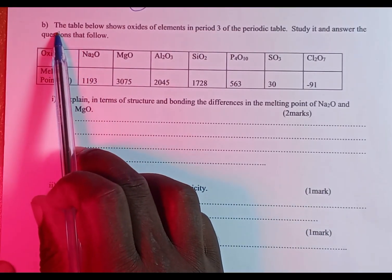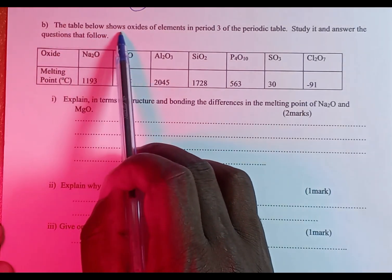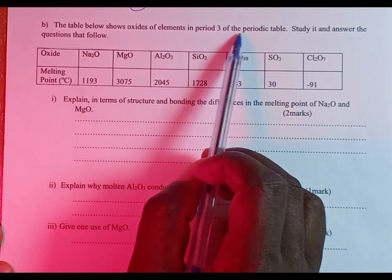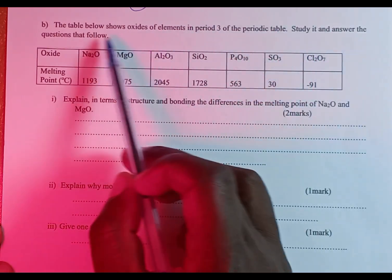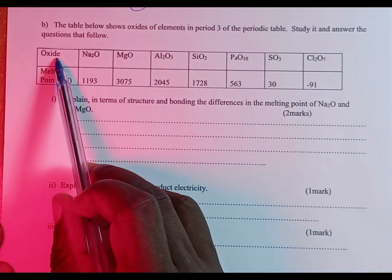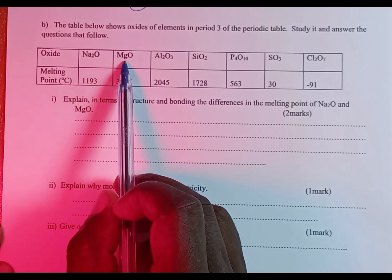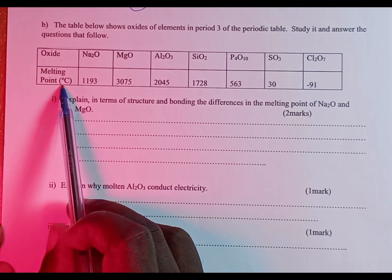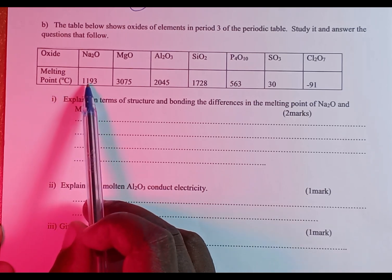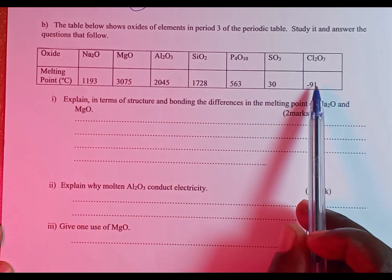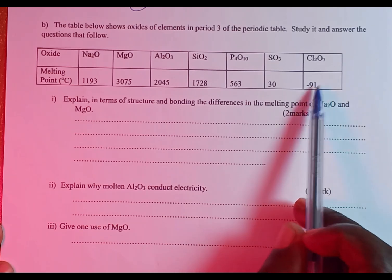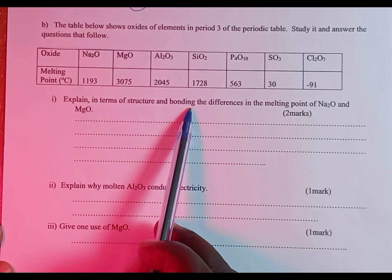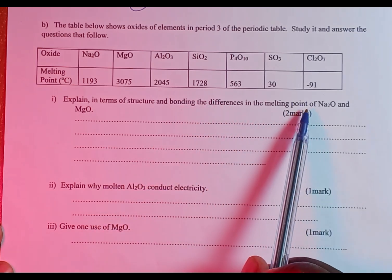We move to part B of the same question. The table below shows oxides of elements in period three of the periodic table — from sodium oxide all the way to chlorine oxide — with their melting points in degrees Celsius. Question (i): explain in terms of structure and bonding the differences in the melting point of sodium oxide and magnesium oxide.